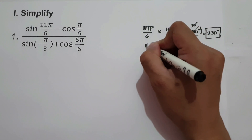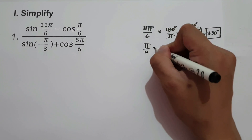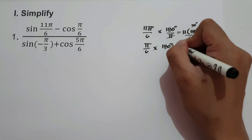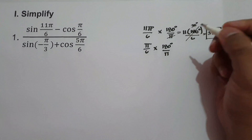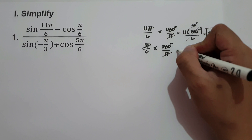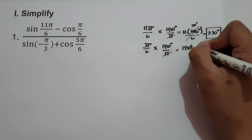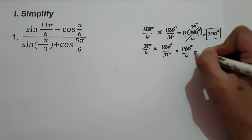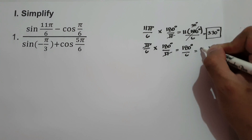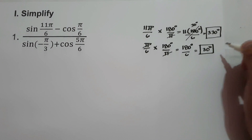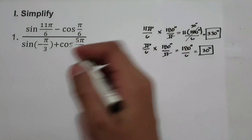Next, we have π over 6. Let us multiply by 180 degrees over π. We cancel π, and we have 180 degrees divided by 6, which is 30 degrees. So π over 6 equals 30 degrees.